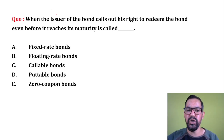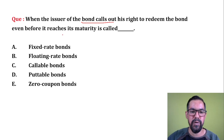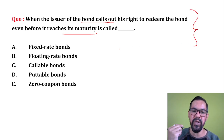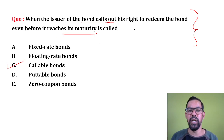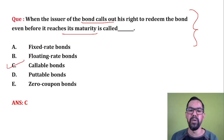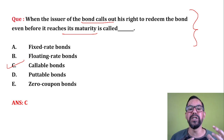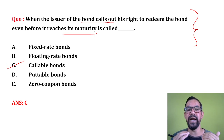Next question: when the issuer of the bond calls out his right to redeem the bond before reaching the maturity period, this is known as the optionability of bonds. We have two types. Callable: the right is reserved to the issuer of the bond — they can call out the bond before maturity. For example, if the Government of India issues a bond for 15 years and calls it out in 10 years, that is a callable bond.